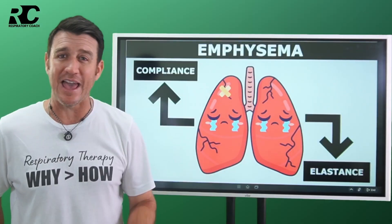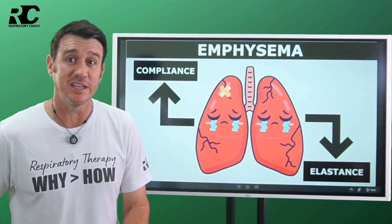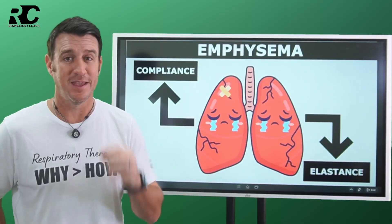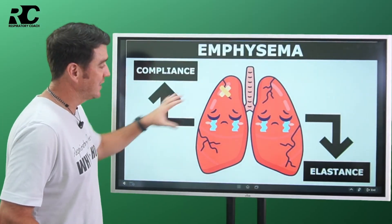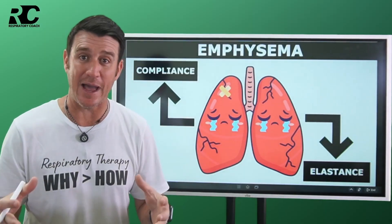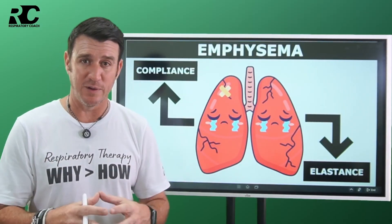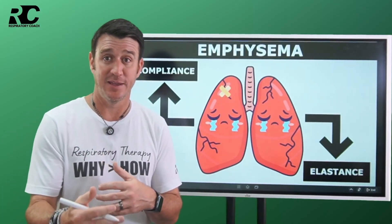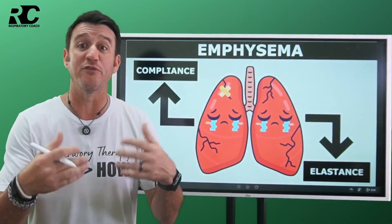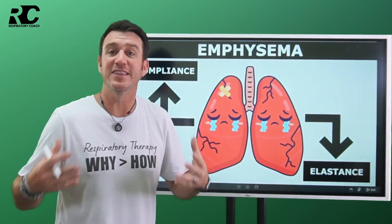Remember why elastance is important? Recoil — that's the mechanism of exhalation. Air goes in, nice compliant lungs, then during exhalation the lungs recoil back to resting state. But in emphysema, because of these big, floppy, overly compliant lungs that have lost their elasticity, they don't recoil. So what happens to that gas? It gets trapped. It doesn't get fully exhaled. That's also why, when working with patients with emphysema or COPD, we teach those patients how to pursed-lip breathe — to extend exhalation and promote a more full, complete expiratory phase. Due to the loss of elasticity, they'll chronically air trap.